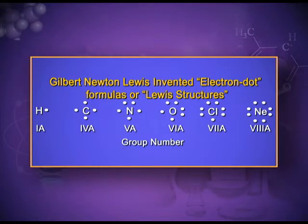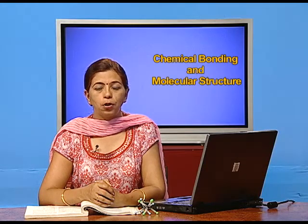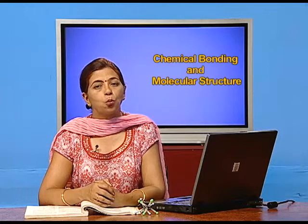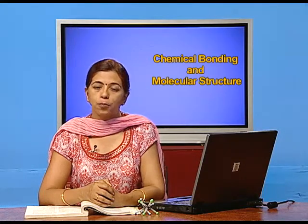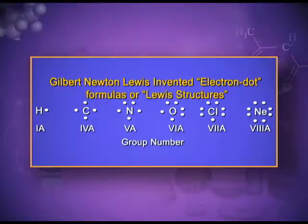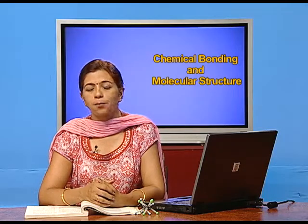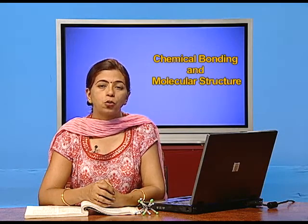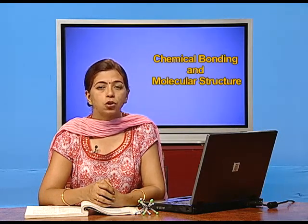The first group elements have only one electron in their valence shell, which will participate in chemical bonding. So we write the symbol of the element and put one dot — one dot means one electron. Similarly, the second group has two valence electrons, so we write the symbol of the element, for example beryllium, and show two dots representing the two electrons.